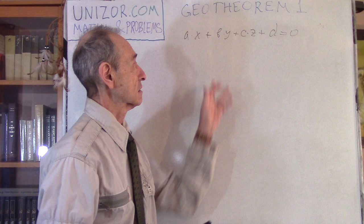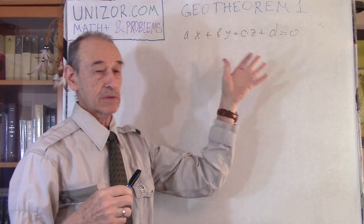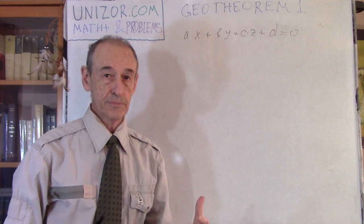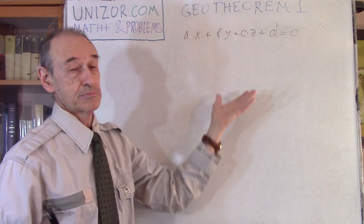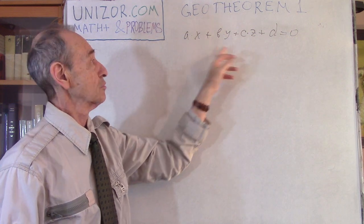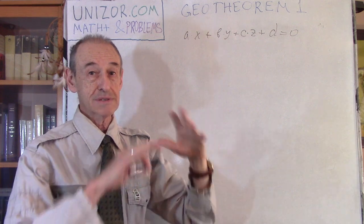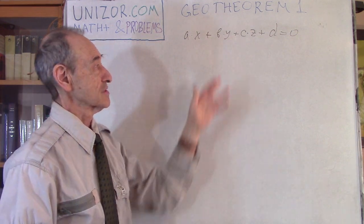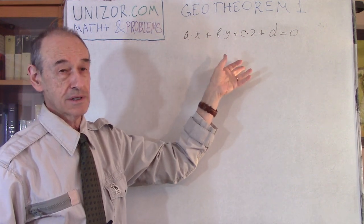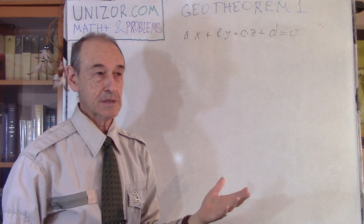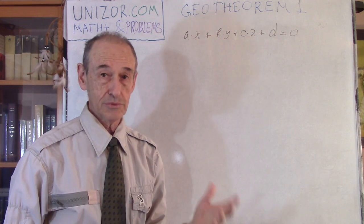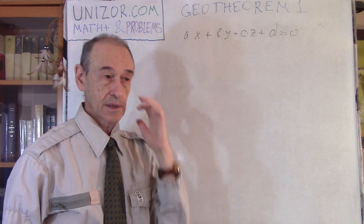This equation connects X, Y, and Z. A, B, and C are not simultaneously equal to zero — if they were, there would be no meaningful equation. If D is also zero and A, B, C are all zero, any X, Y, Z fits, covering the entire space. If D is not zero but A, B, C are all zero, no solution exists. So at least one of A, B, or C must be non-zero to define a plane.